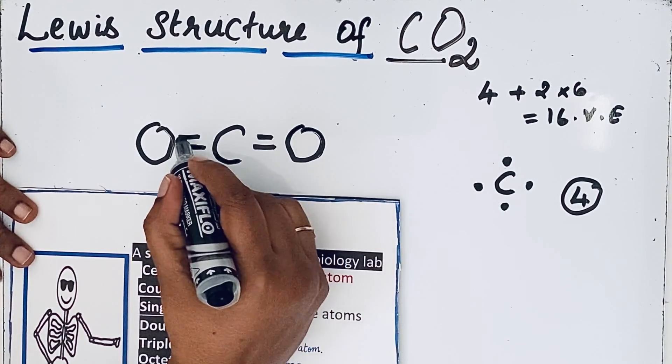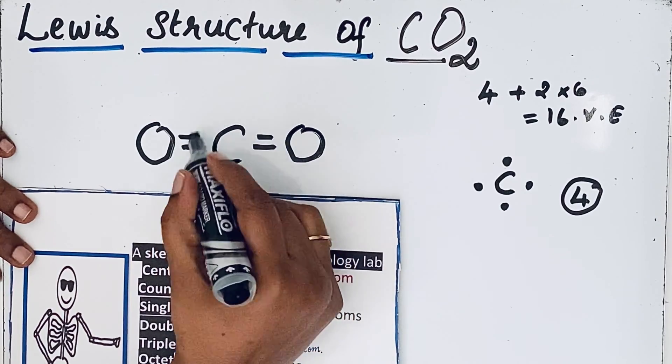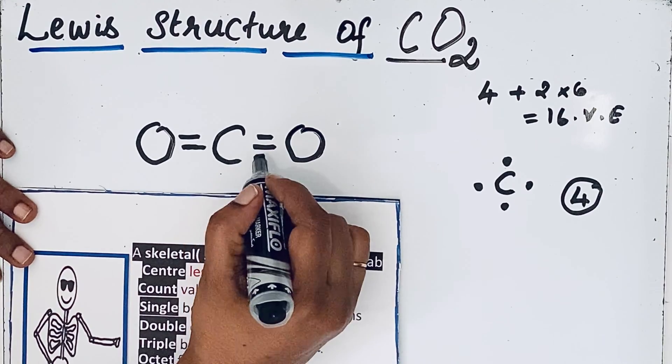So each bond, two electrons. So two, four, six, eight. So it means octet configuration for carbon is completed.